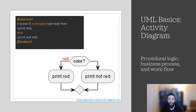Another diagram that PlantUML is capable of depicting is an activity diagram. Activity diagrams are a technique to describe procedural logic, business process, and workflow. They play a role similar to flowcharts, but the main difference is that activity diagrams support parallel behavior. Use activity diagrams to show workflow and process modeling. In this example, the activity diagram shows a conditional statement for color: if the color is red, the action is to print red; if it is not red, print not red. This is an easy-to-understand activity diagram that shows procedural logic.